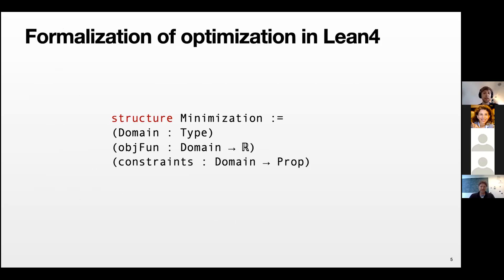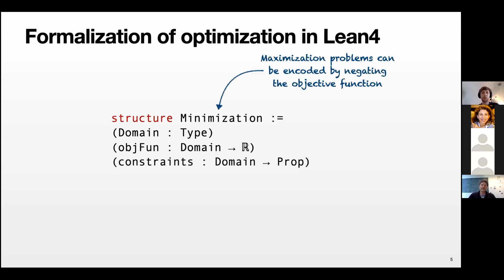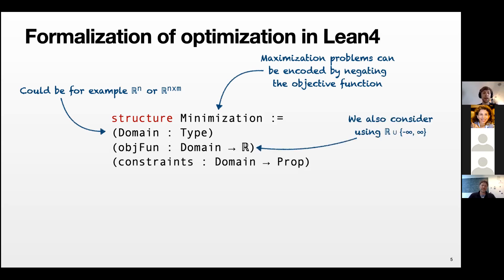They have started to implement and formalize optimization in Lean 4. The definition of an optimization problem only defines minimization problems, since maximization problems can be defined as minimization problems where the objective function is negated. The definition has three fields: the domain (which could be R^n, a matrix domain, or something more complicated), the objective function (currently mapping to the reals, with consideration of extended reals), and a field for constraints.